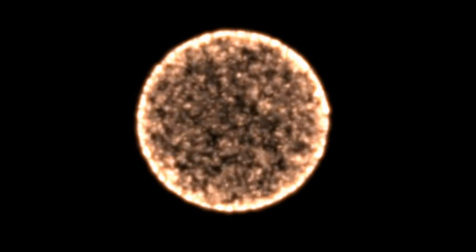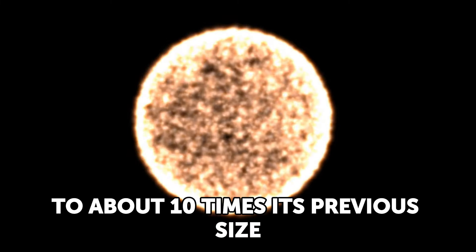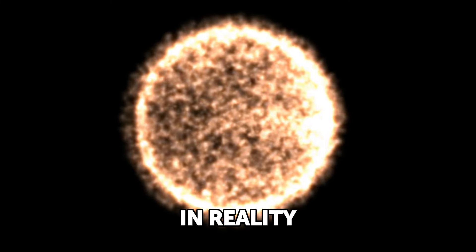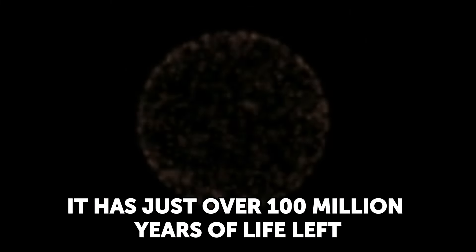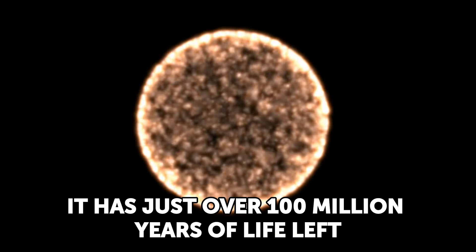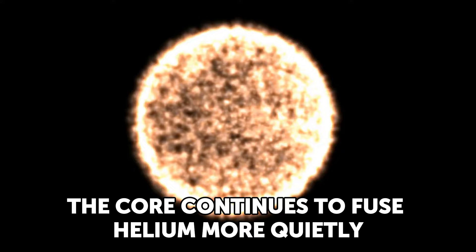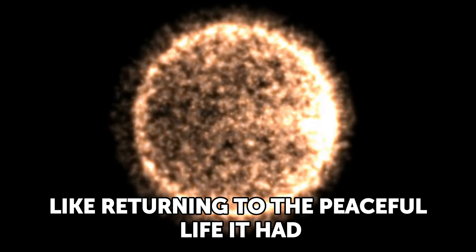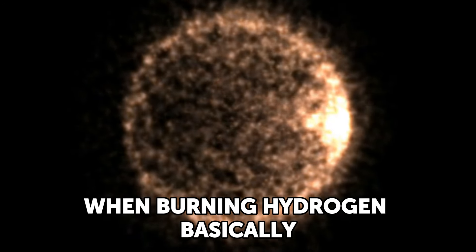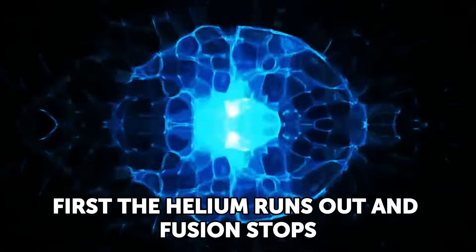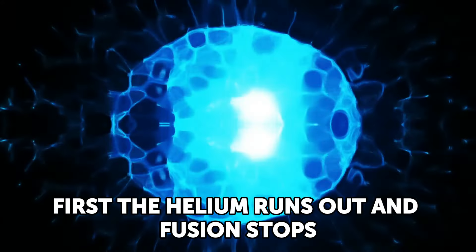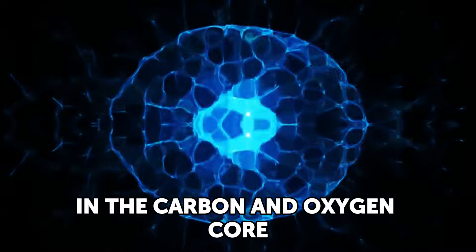But although it can't be seen from the outside, the helium flash has a very important effect. As the core expands, it cools, slowing nuclear reactions. Consequently, the outer layers contract, and the sun deflates to about ten times its previous size. In reality, the helium flash has dealt a mortal blow to the sun. It has just over 100 million years of life left. The core continues to fuse helium more quietly, like returning to the peaceful life it had when burning hydrogen. Basically, the same steps repeat.